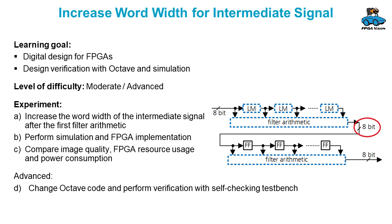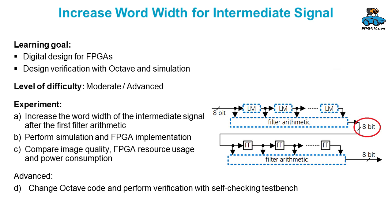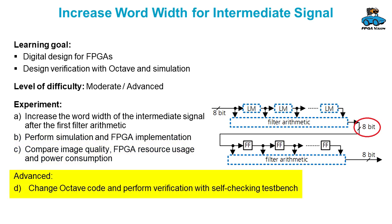The last experiment for this video is increasing the word width of the intermediate signal between the vertical filter and horizontal filter. The original design uses 8-bit, but you could increase that to have higher accuracy. You can check the image quality and resource usage by performing the experiment in simulation or on the remote lab. If you want a more advanced experiment, you could also change the Octave code and use the self-checking test bench.